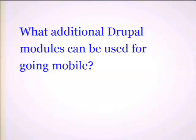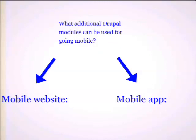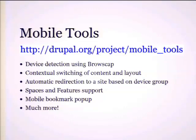What additional modules can be used for going mobile? There are two big categories. One you need for the mobile website, while another you need for the mobile app. For the mobile website, there's the Mobile Tools module, which has lots of functions: it allows detecting the user device using BrowserCap, provides contextual switching of content and layout, can do automatic redirection to a site based on a specific device group — smartphone to one site, tablet to another, PC to the main site. It also supports Spaces and Features and has a mobile bookmark pop-up.